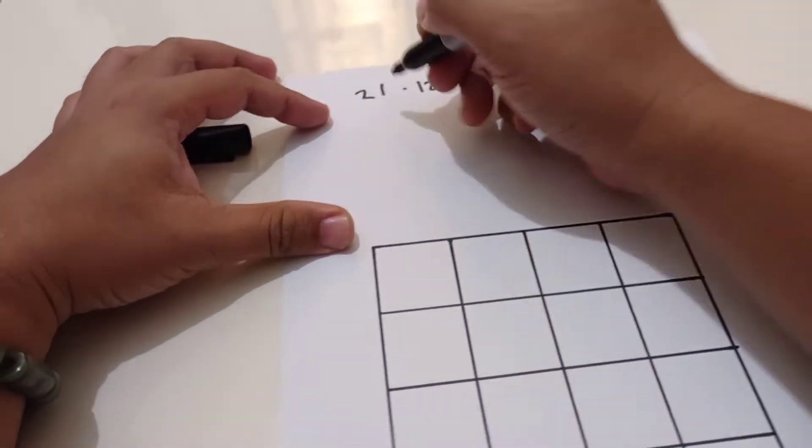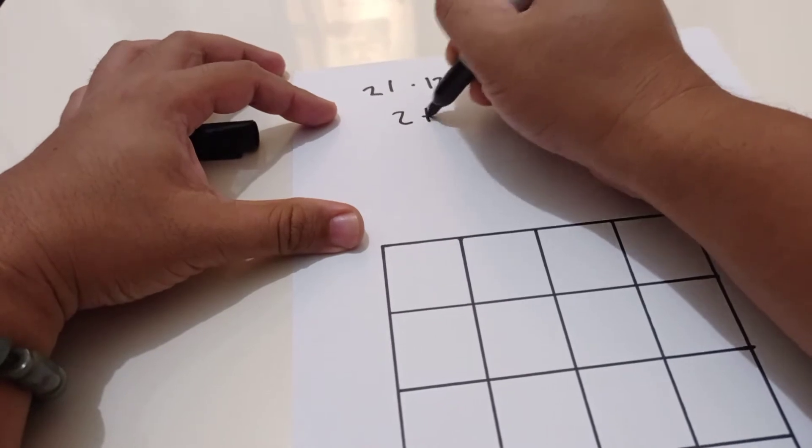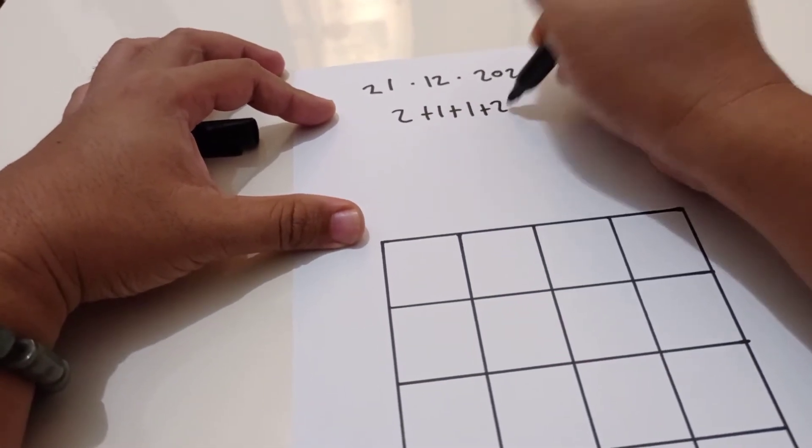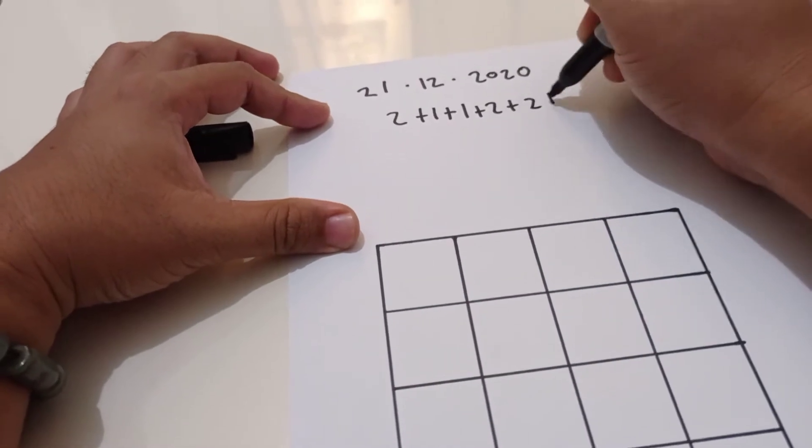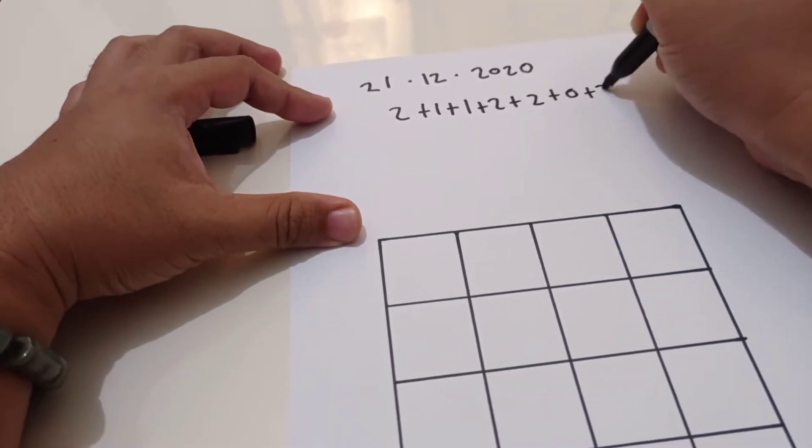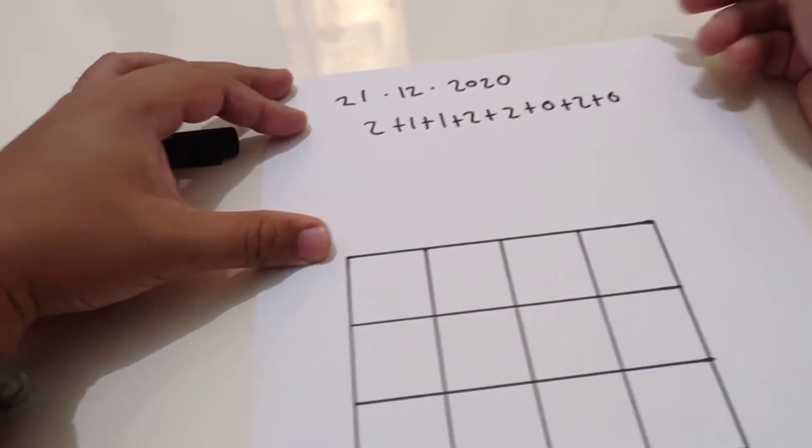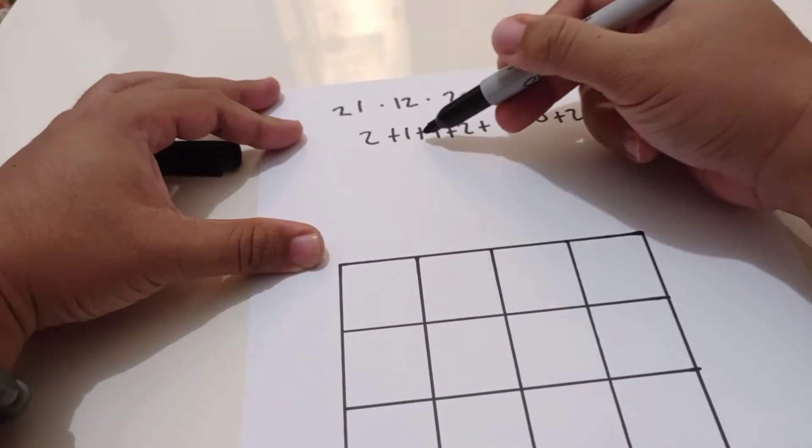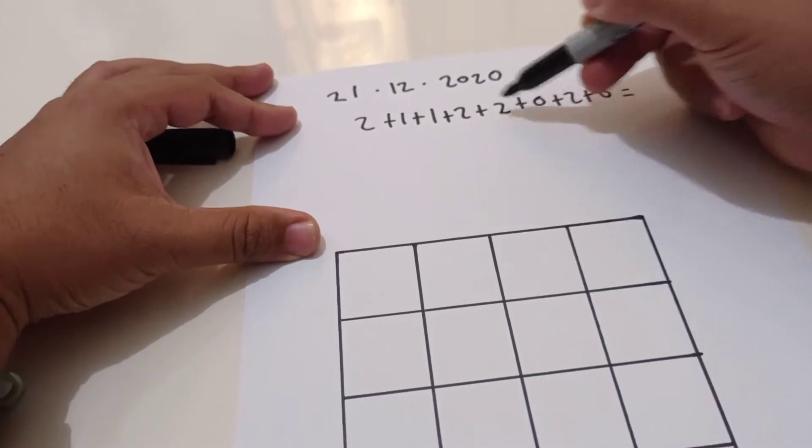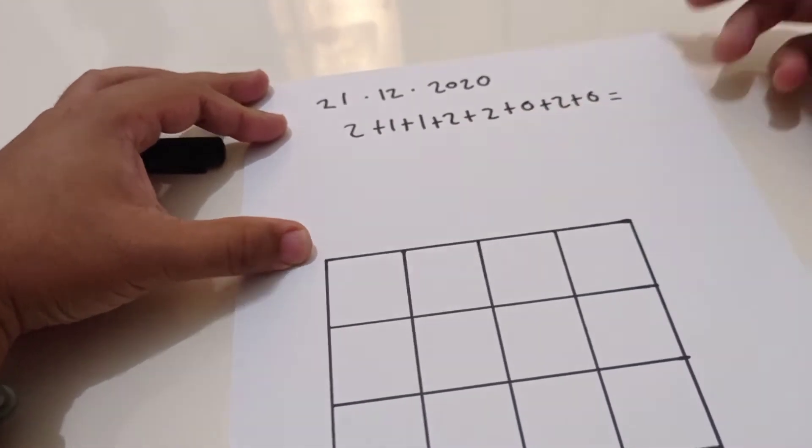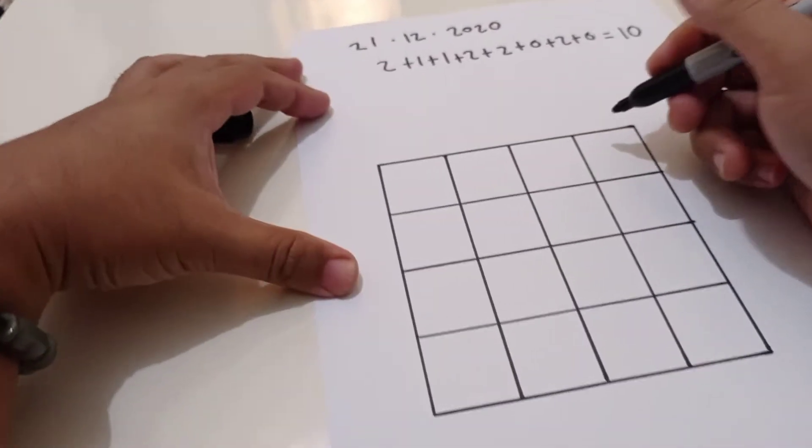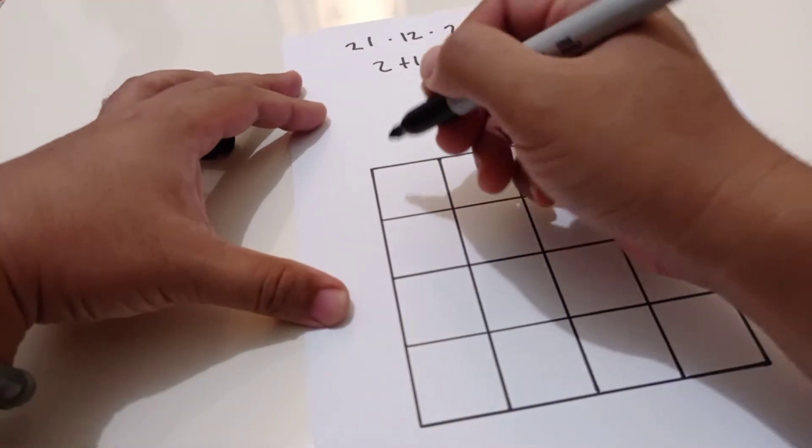Sum total all of these numbers: 2 plus 1 plus 1 plus 2 plus 2 plus 0 plus 2 plus 0. How much is this? Three, four, six, eight, ten. Okay, let's see how old is Max Maven now.